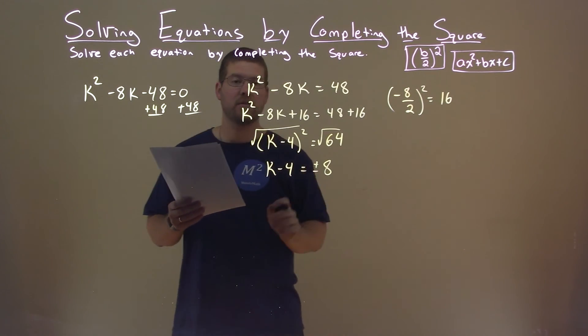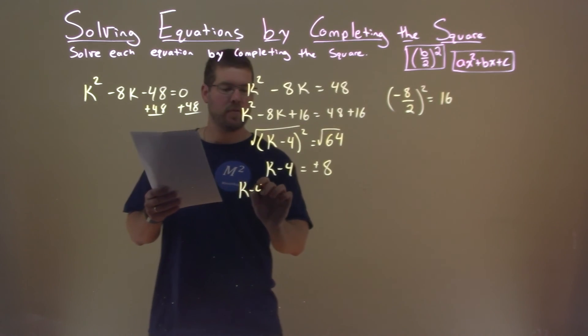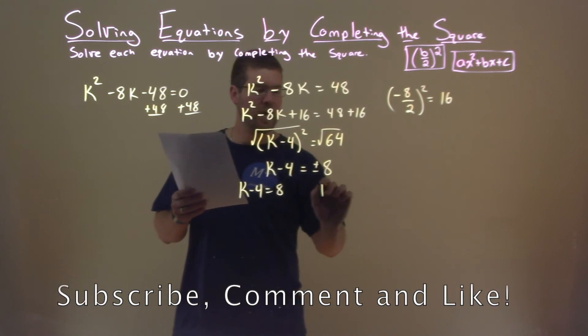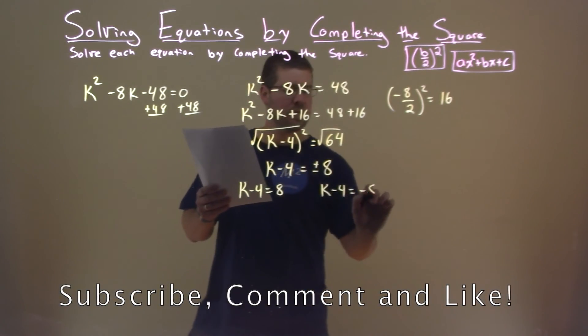We're now going to break this down into two equations: k - 4 = 8 and k - 4 = -8.